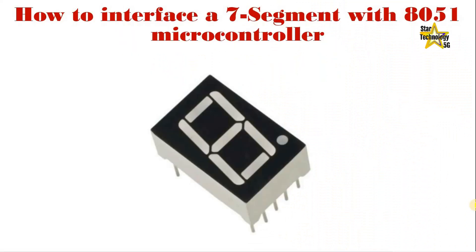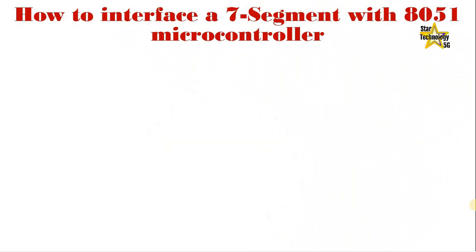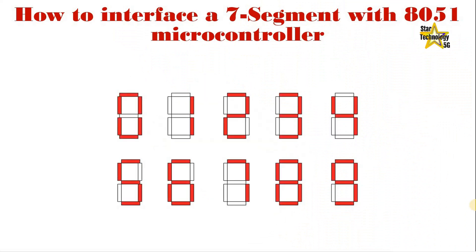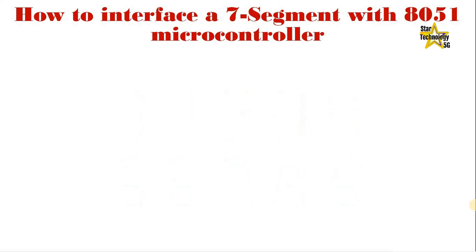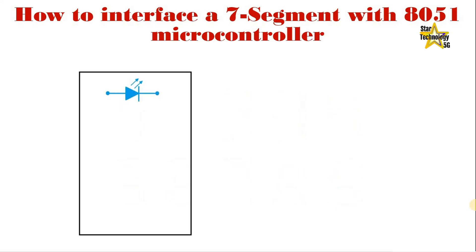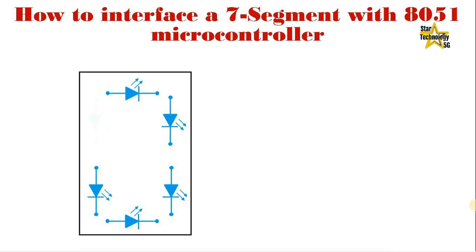A 7-segment display is a rectangular-shaped electronic component frequently used in electronic circuits. 7-segment displays are basically used to show numbers from 0 to 9 and some letters. The 7-segment display consists of 7 LEDs arranged in a rectangular shape.